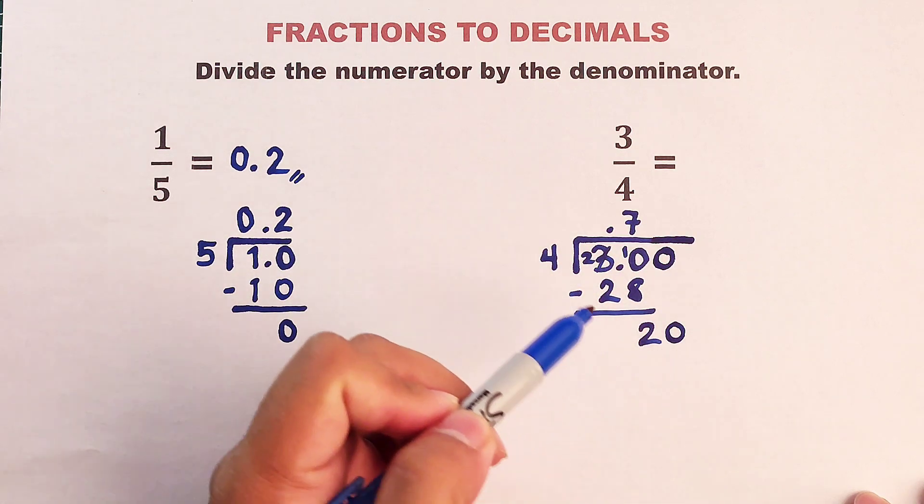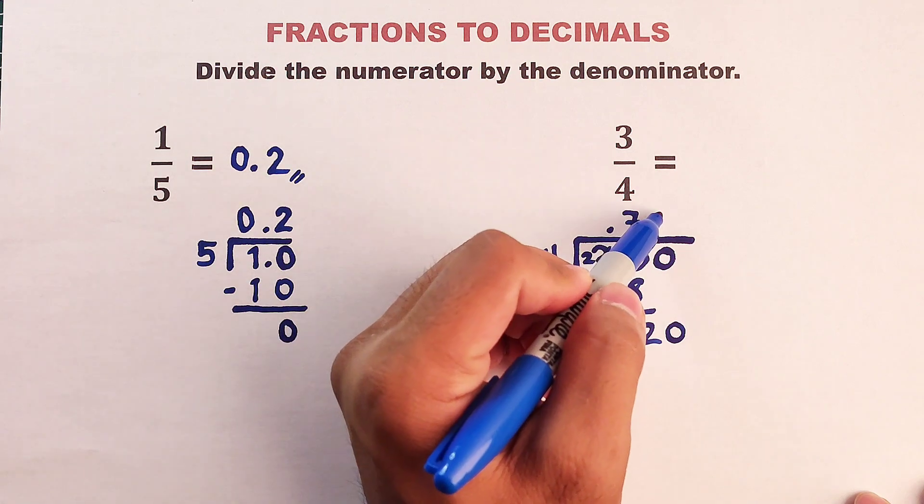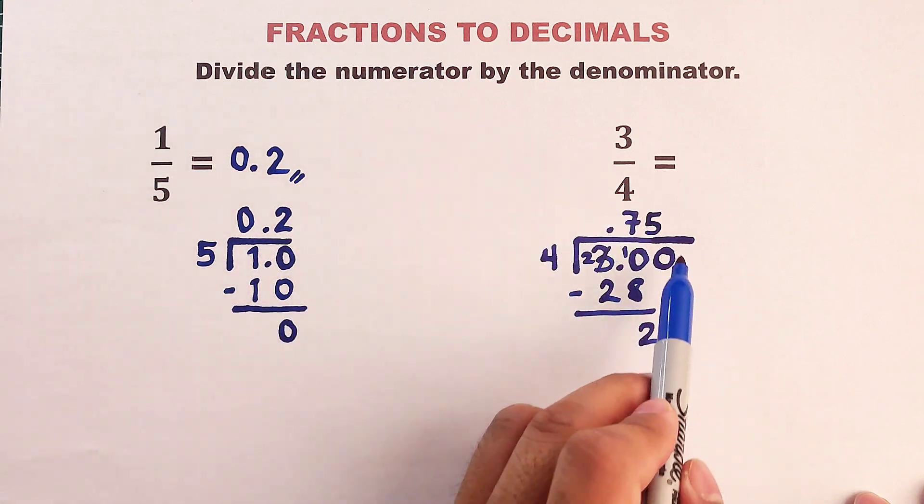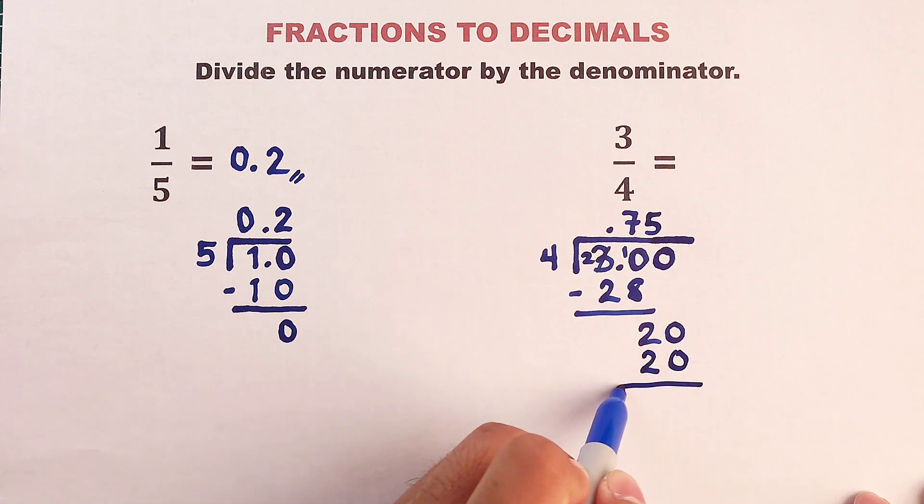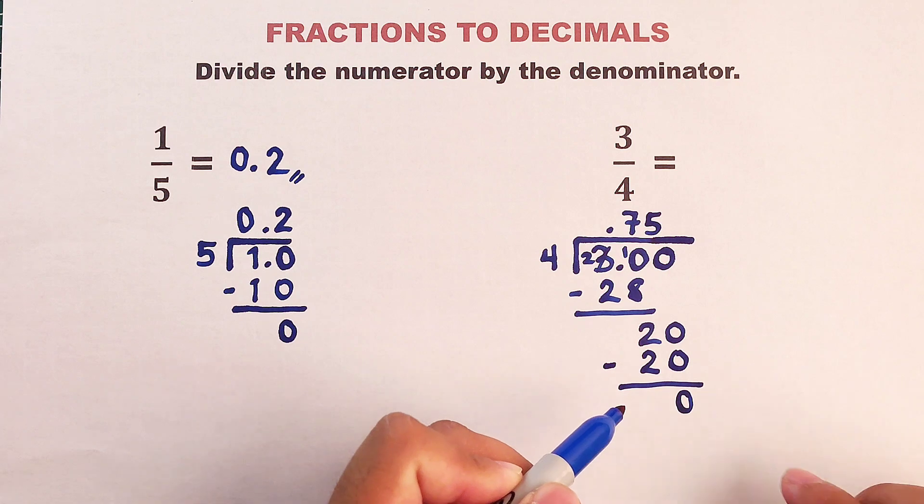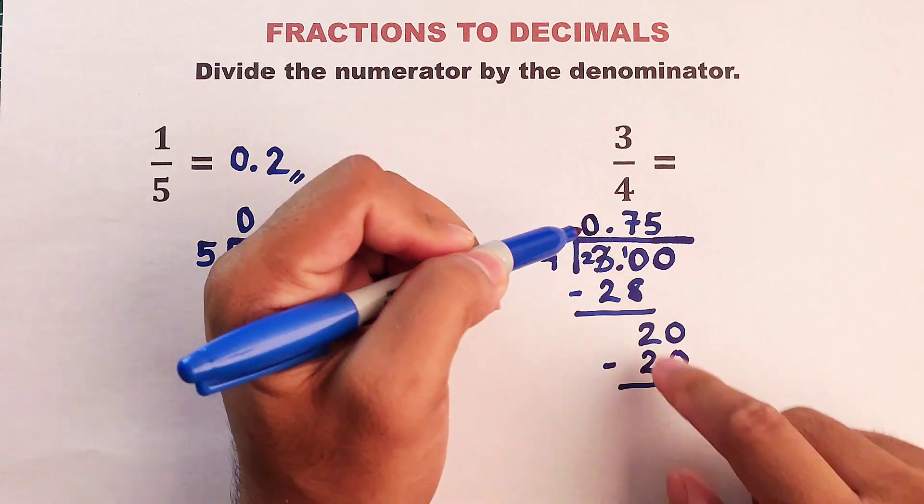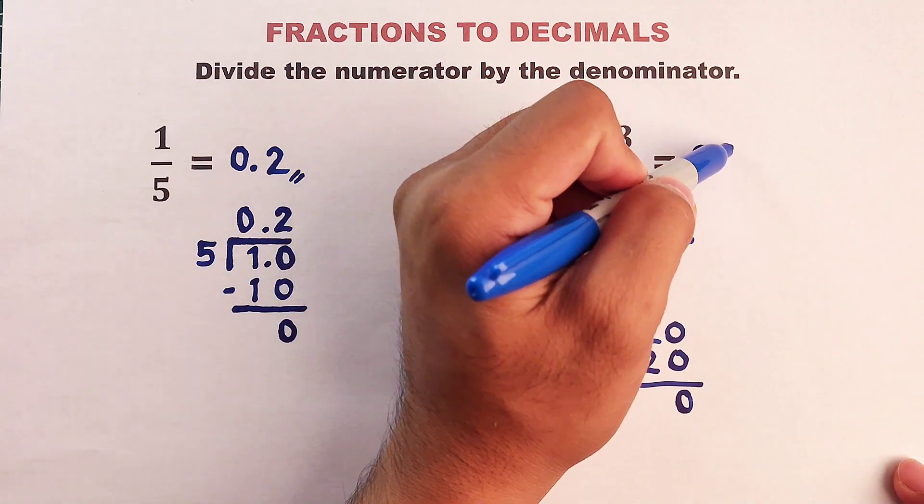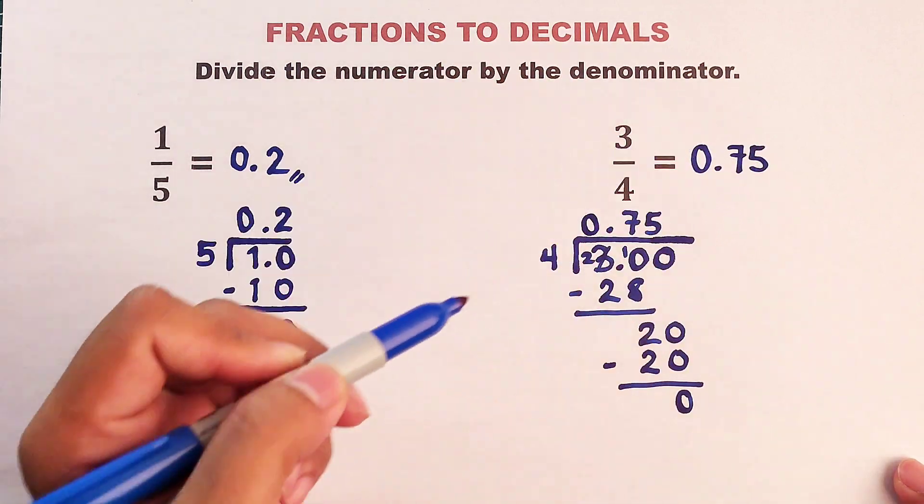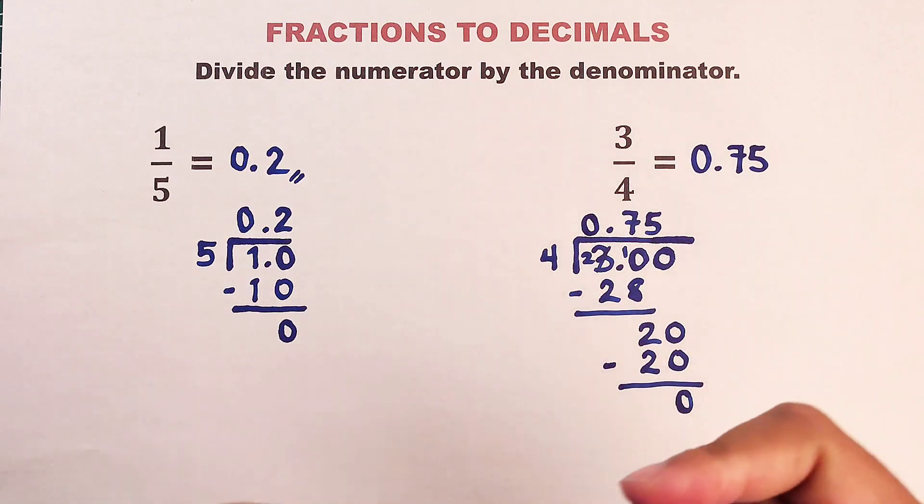But right now, we still have a number here. So we will add another 0 here and bring down 0. Right now we have 20 divided by 4. How many 4s do we have? So we have 5. 5 times 4, that is equal to 20. So subtract. The answer is 0. As you can see, this is already 0, meaning this might be our answer. So we have 0.75. The equivalent decimal of 3 over 4 is 0.75.